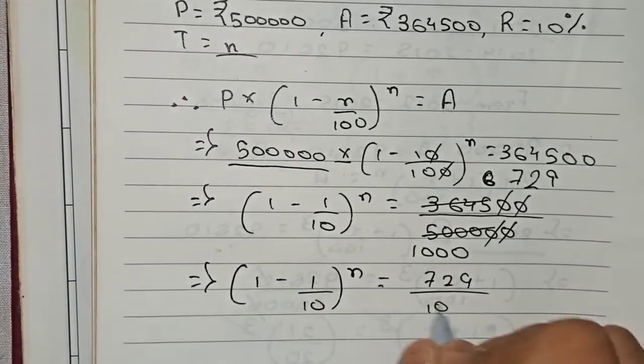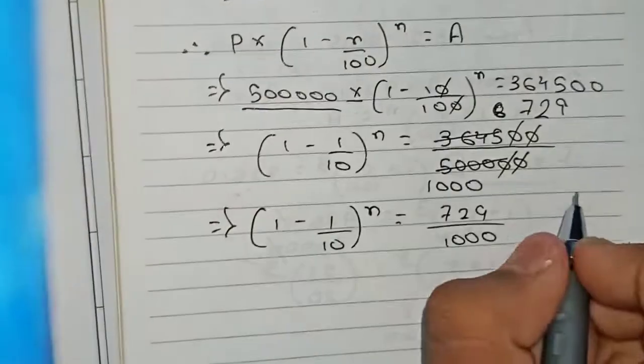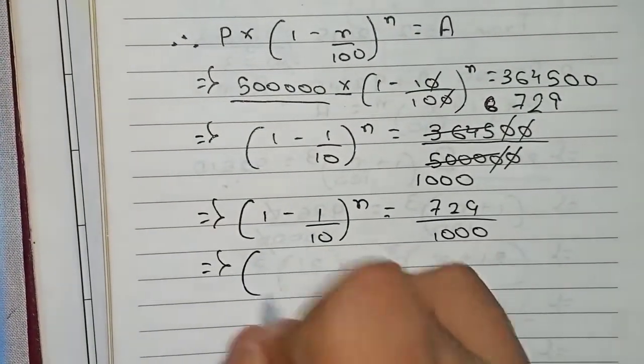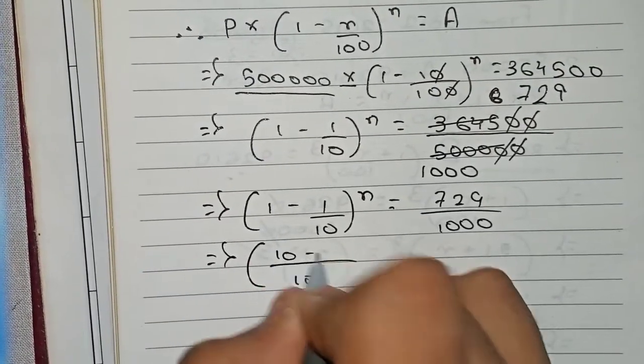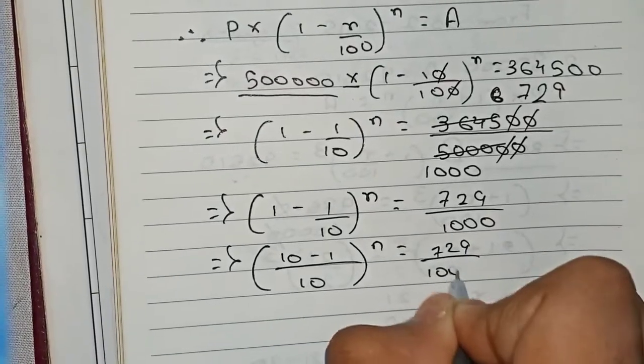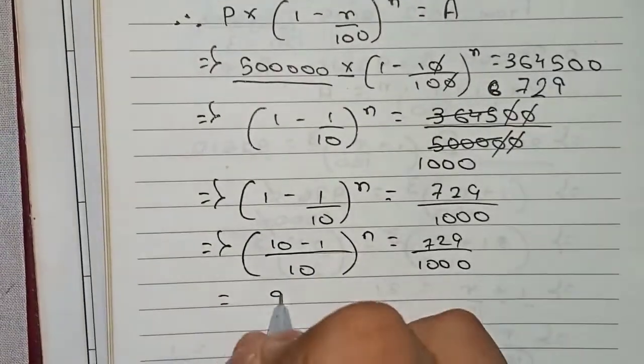Now we solve the left side. It becomes (10 - 1)/10 to the power n equals 729 by 1000. So it becomes (9/10) to the power n equals 729 by 1000.